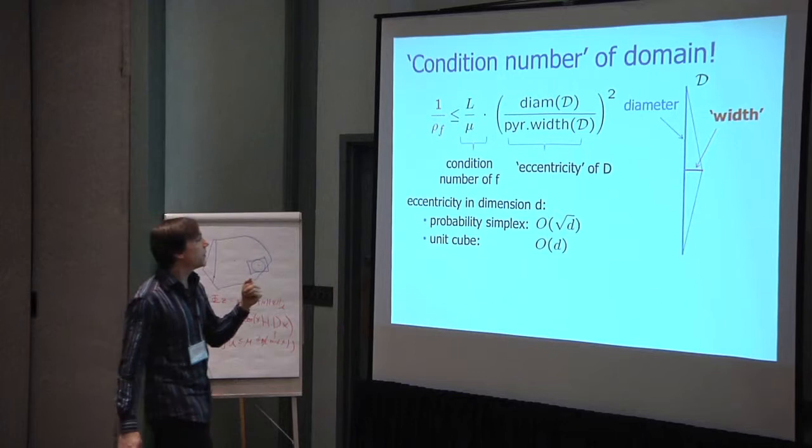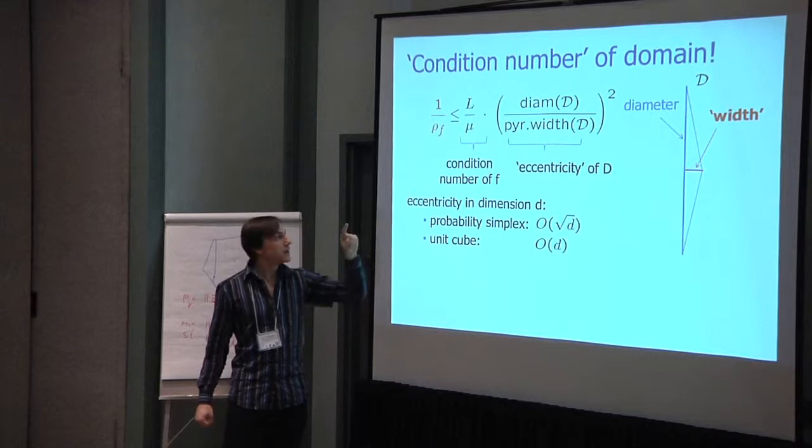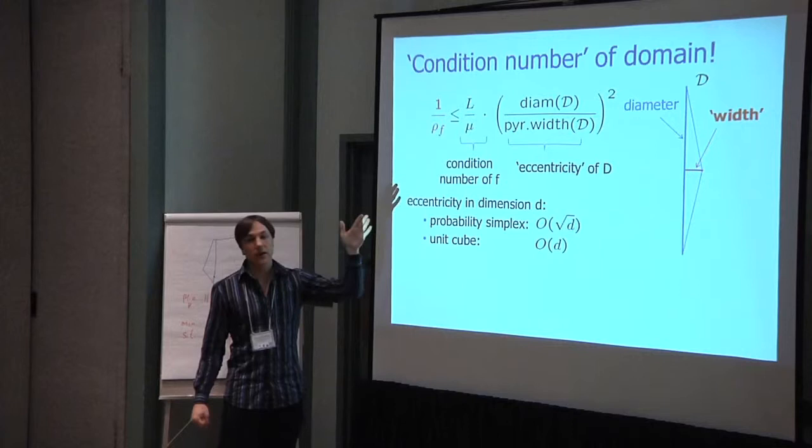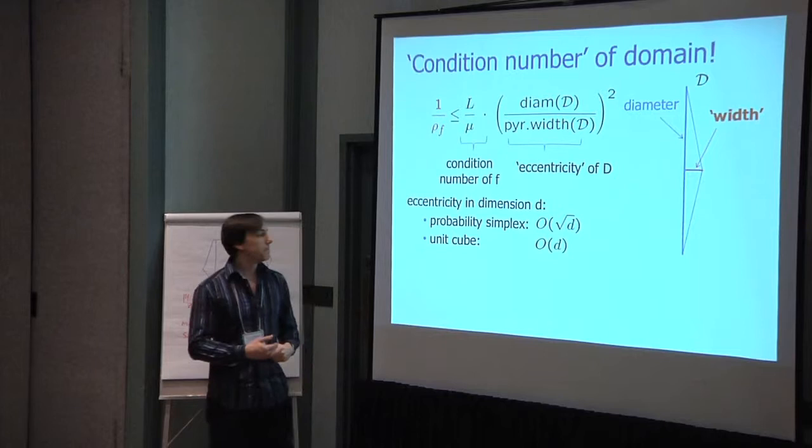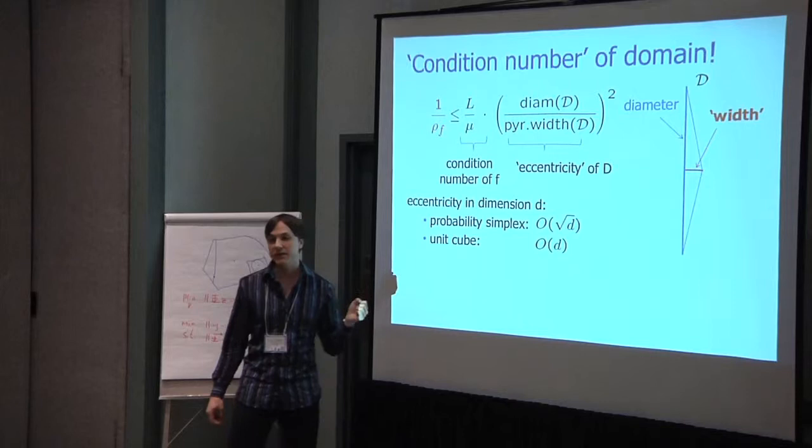To give you two examples of standard sets, how it scales with dimension D. For the probability simplex, the eccentricity will scale as square root of D. So that gives an overall rate of, for example, the complexity of your algorithm then becomes D log 1 over epsilon to reach error epsilon. So we don't beat the lower bound which scales with D, which makes sense. And then for the cube, you actually have order D eccentricity, so then you get a D squared complexity for the algorithm.